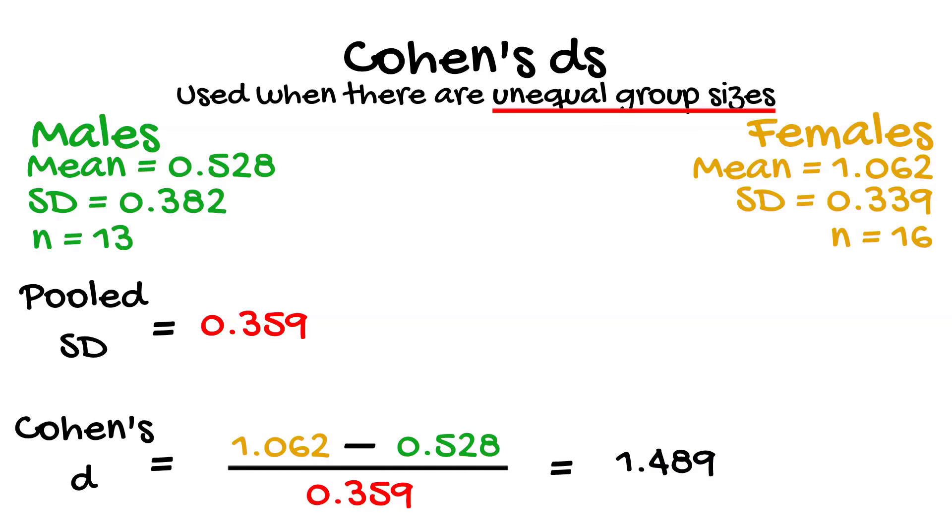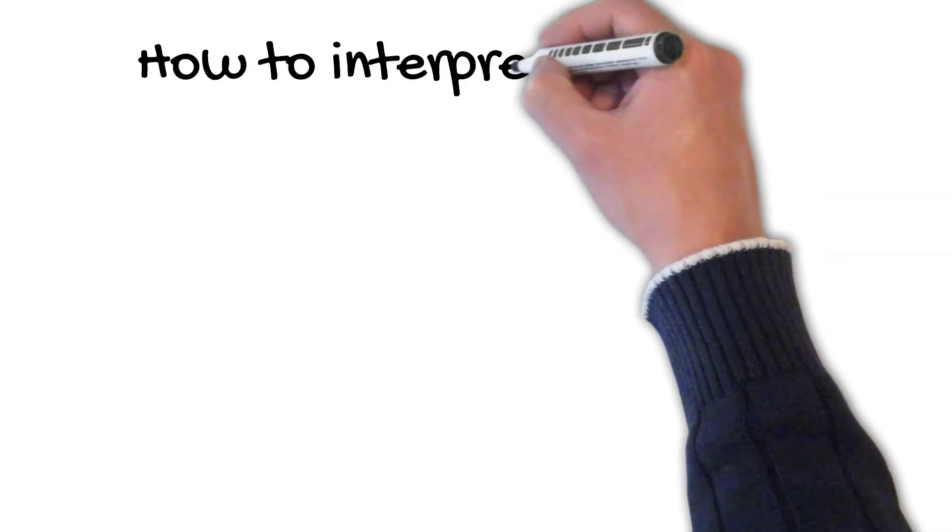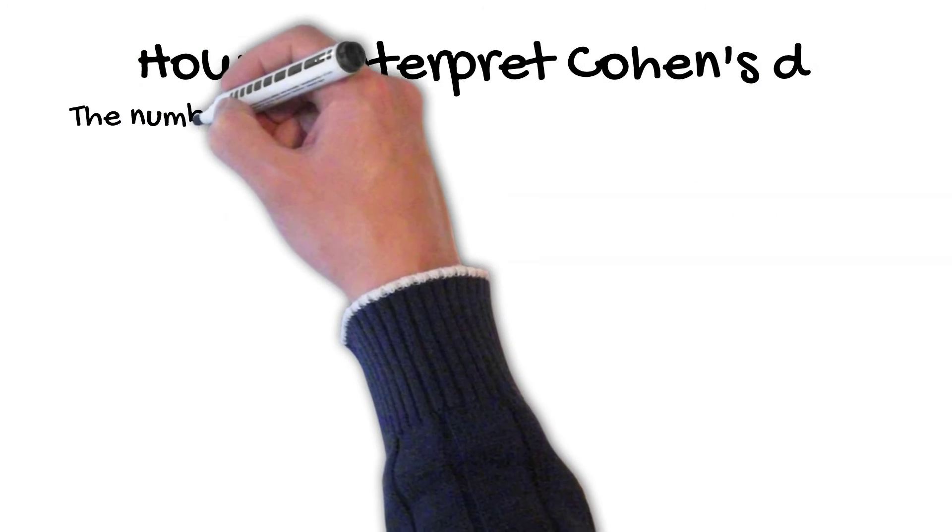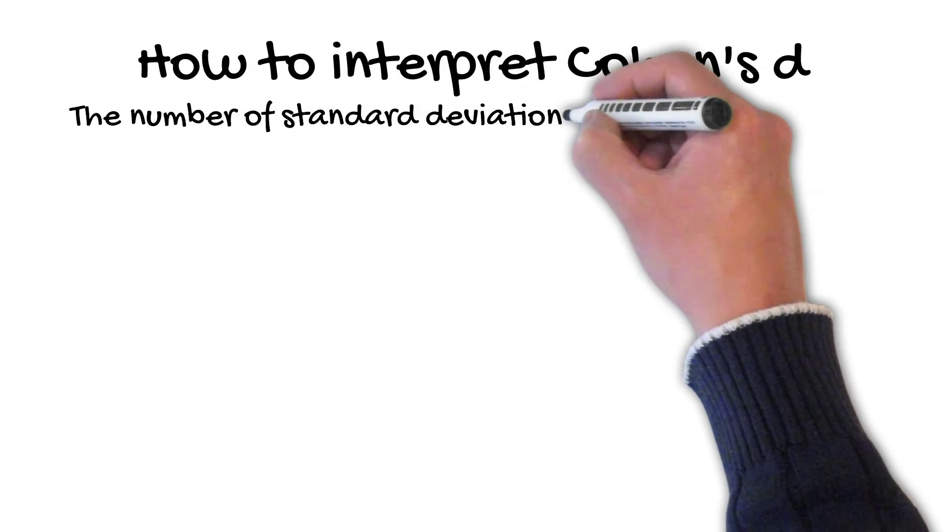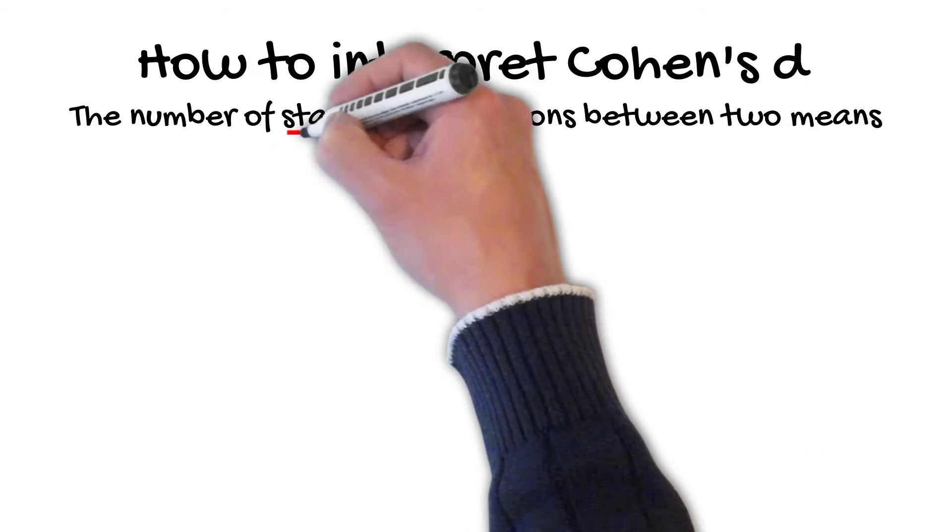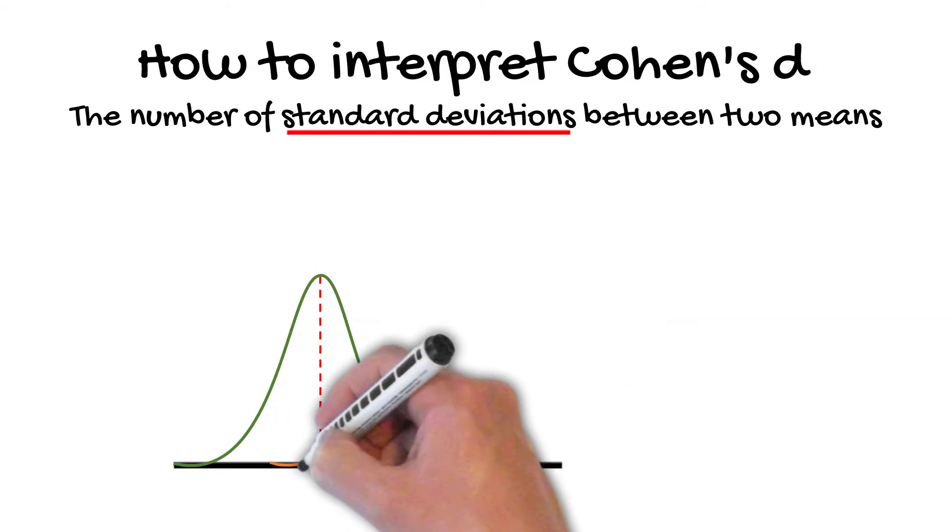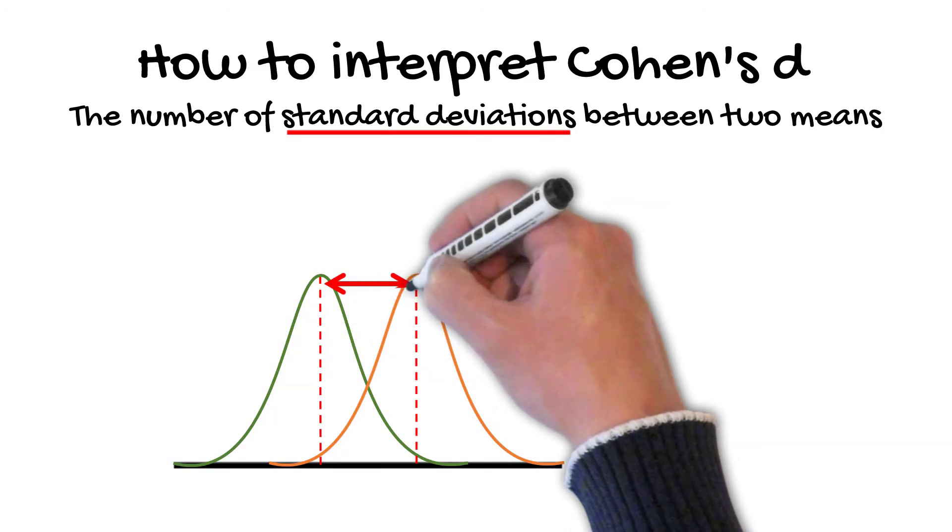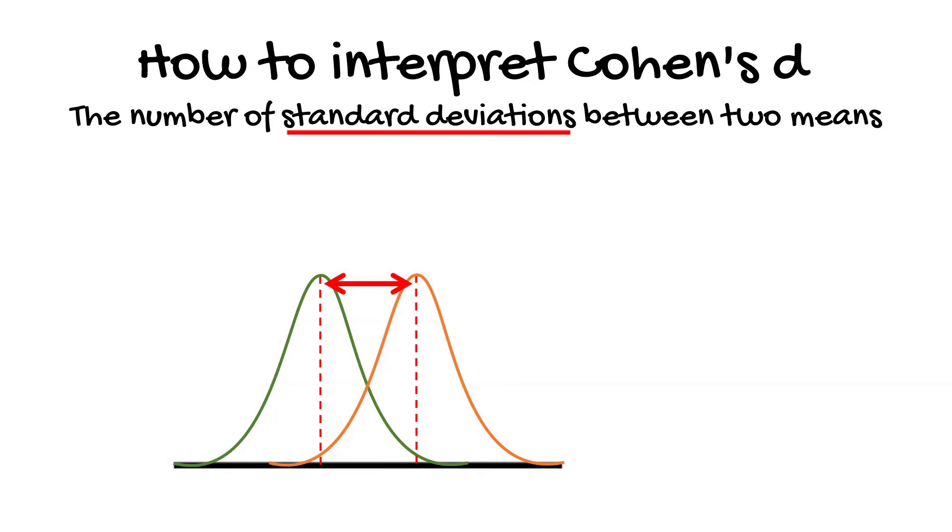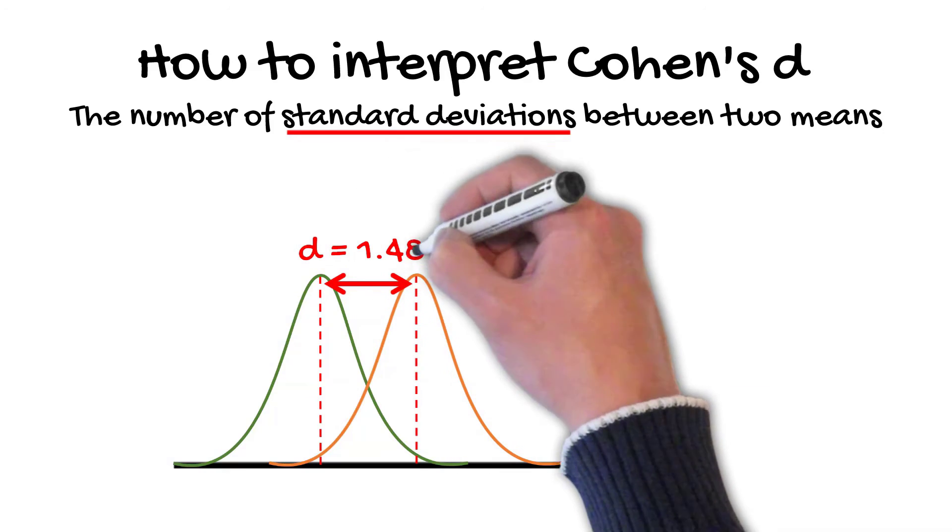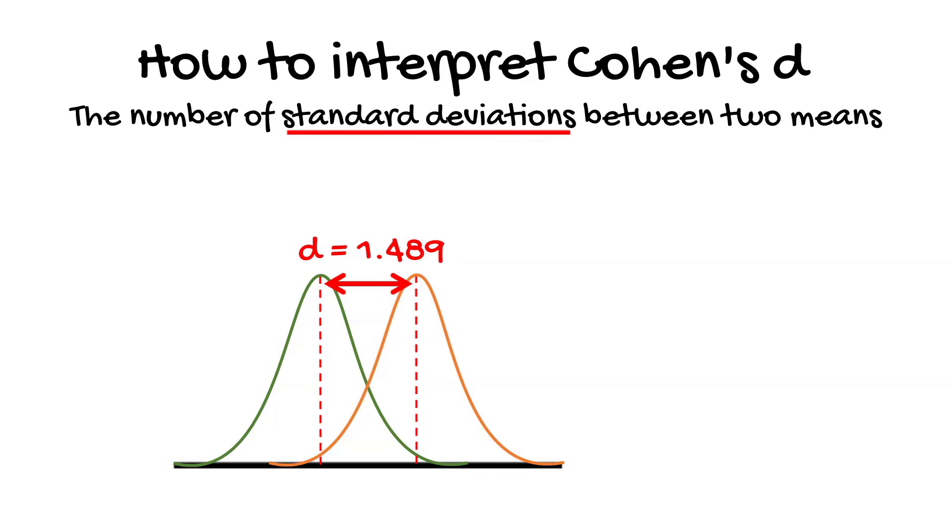But what does a D value of 1.489 actually mean? Simply, you can think of Cohen's D values as the number of standard deviations between the two groups. So, a value of 1 indicates that the means of the two groups differ by one standard deviation. In the example, the Cohen's D value was 1.489, meaning that the concentrations of the protein in the males and females differed by 1.489 standard deviations.